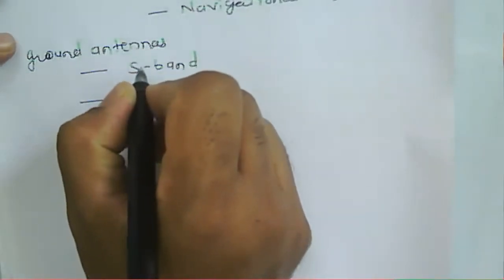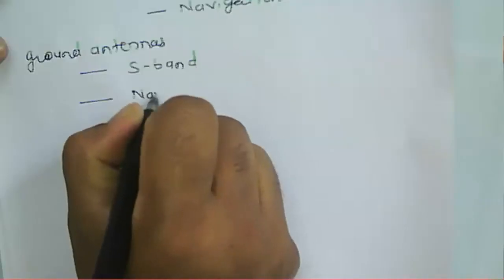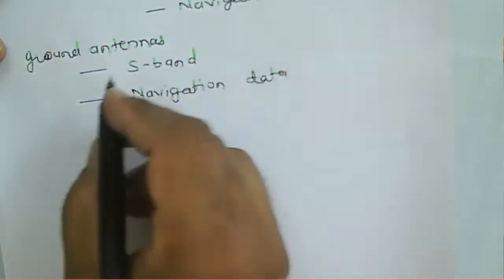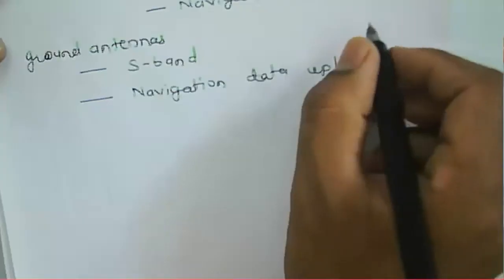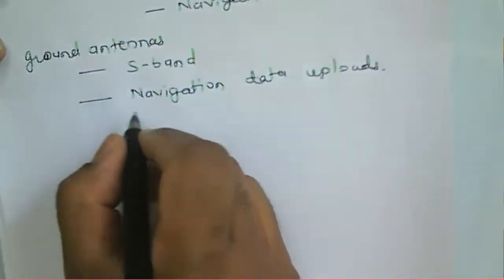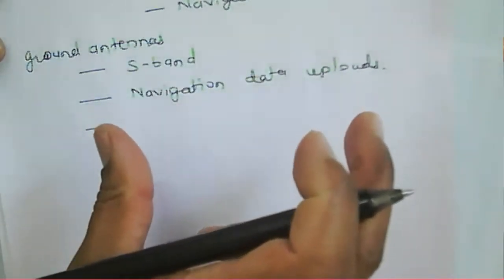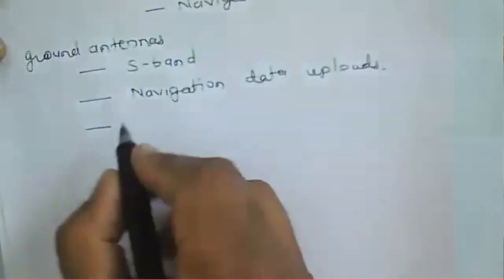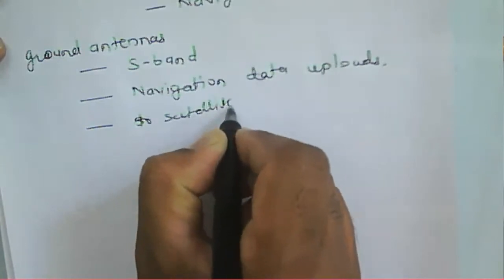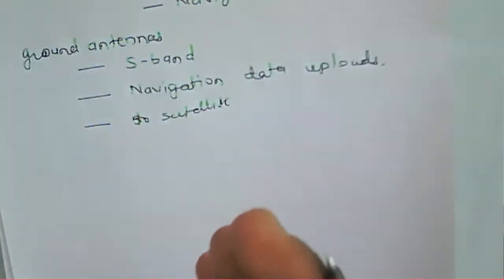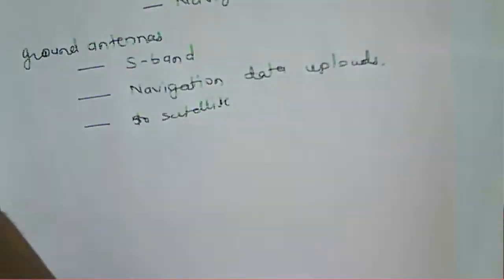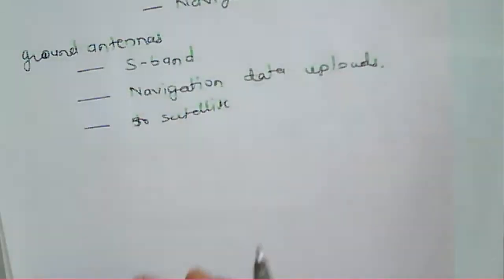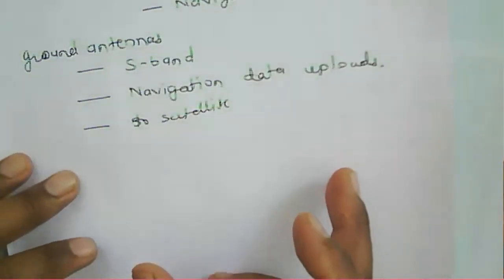The ground station antenna transmits the navigation data that is to be uploaded. That navigation data is transmitted through the telemetry command channel to the satellite. The satellite receives the data, generates telemetry information, and verifies the data. Whatever data is sent by the MCS is corrected through the telemetry tracking command.